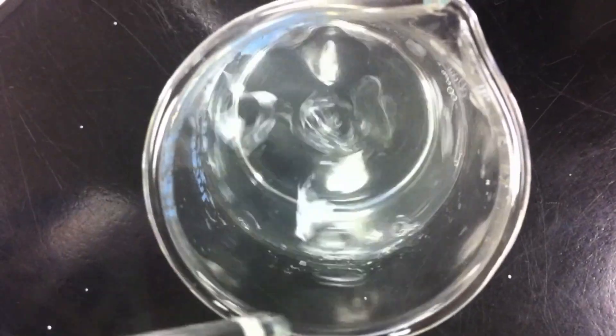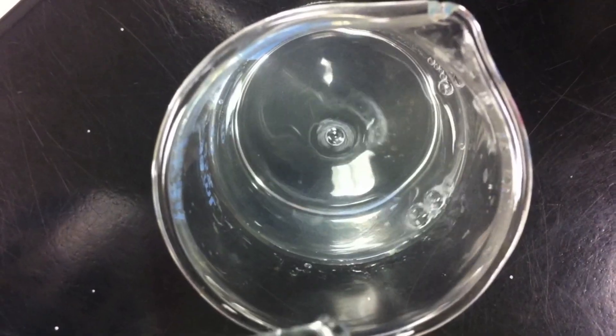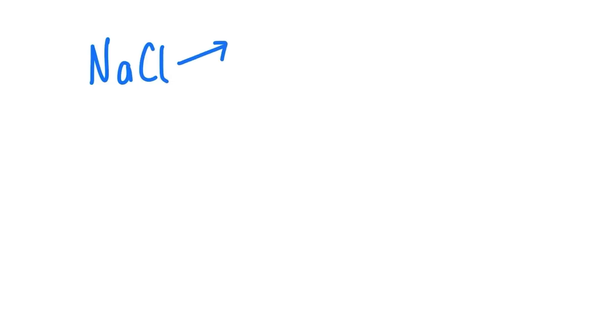That would form a salt water or a sodium chloride solution. This happens because salt, or NaCl, is made up of a positively charged sodium ion and a negatively charged chloride ion.